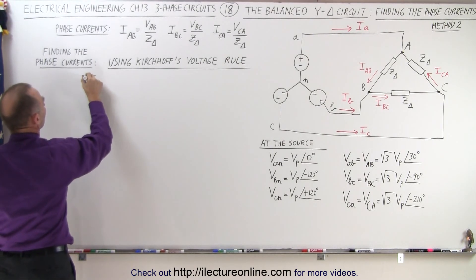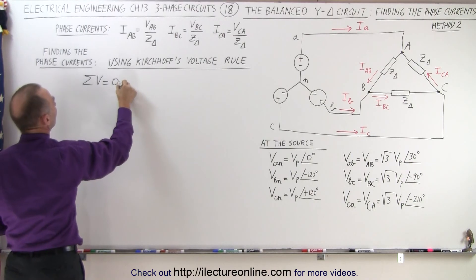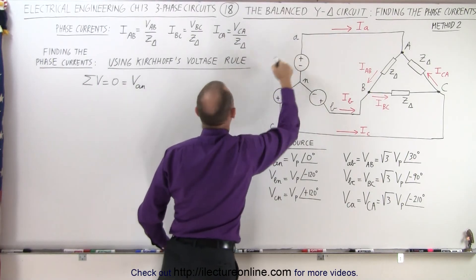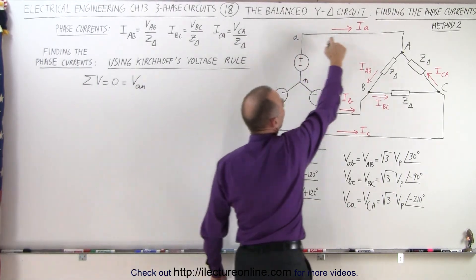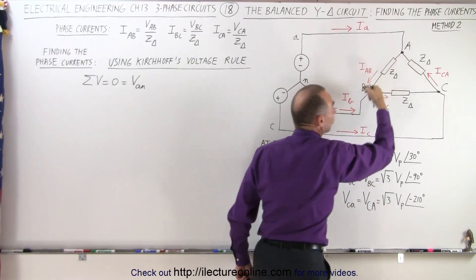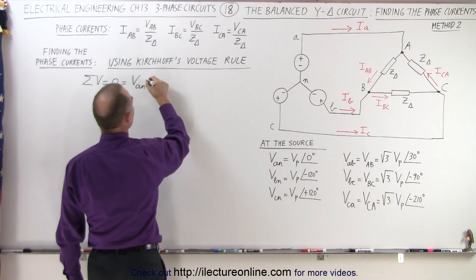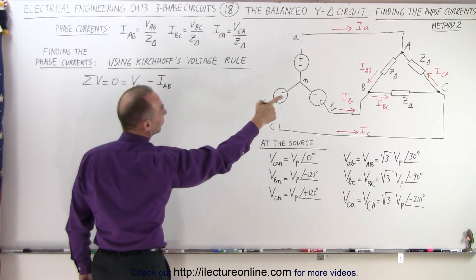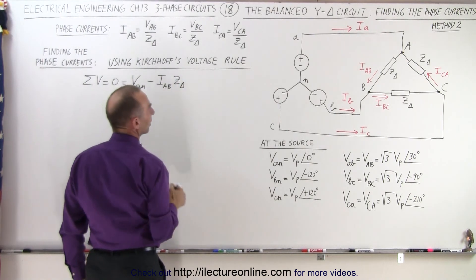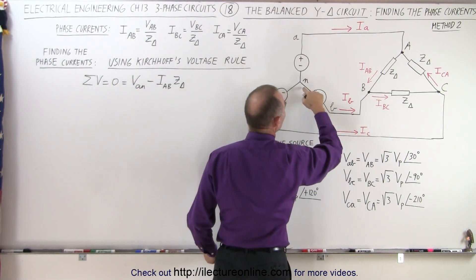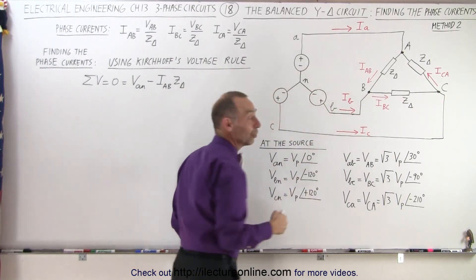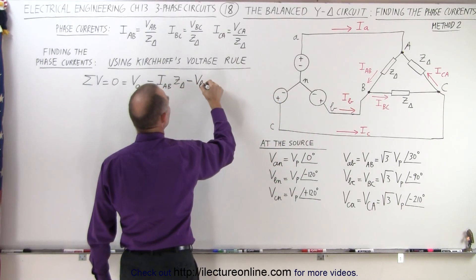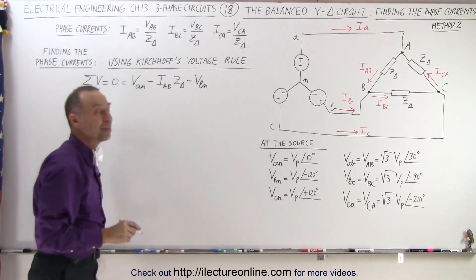The sum of all the voltages should add up to zero, which is equal to VAN. We start at N and go to A, so that's a voltage rise. Then we come around and go across the impedance with the current, so that would be a voltage drop — minus the current IAB times the impedance Z delta. Then we go across the phase voltage from B to N, which is a voltage drop, so it would be minus VBN, and that brings us back to the beginning, meaning they all add up to zero.